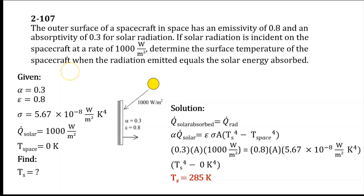In our problem, a spacecraft in space absorbs solar radiation while losing heat to deep space by thermal radiation. The surface temperature of the spacecraft is to be determined when steady conditions are reached. Before we proceed in finding the surface temperature, we will first identify the given values in our problem.